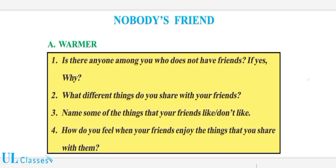بچو، چلیے ہم پڑھنا شروع کرتے ہیں۔ سب سے پہلے ہم yellow color کی box میں دیکھتے ہیں۔ اس میں لکھا ہے: 'Is there anyone among you who does not have friends? If yes, why?'